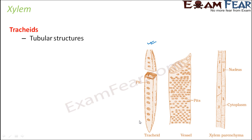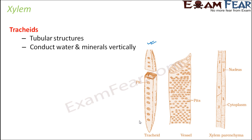Tracheids are tubular structures; the structure is almost like a tube. They conduct water and minerals vertically. When we talk about xylem, the conduction is mostly vertical because the roots are at the bottom and all other parts of the plant are above, so the conduction of water and minerals has to be in the upward, vertical direction. This tubular structure conducts water and minerals vertically.